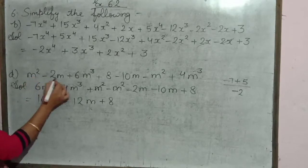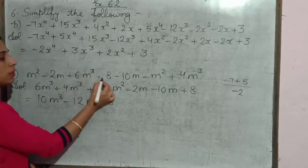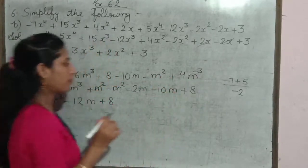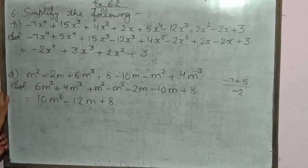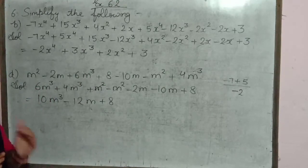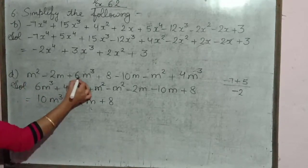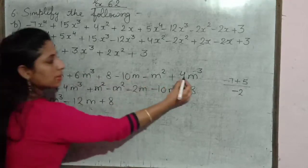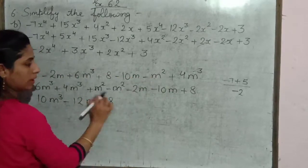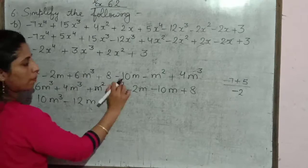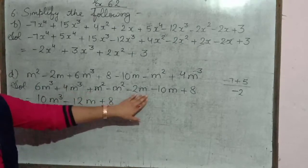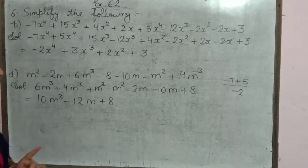Next part is: m square minus 2m plus 6m cube plus 8 minus 10m minus m square plus 4m cube. Sabse pehle yahan hai m square. Par yahan pe m cube wale terms bhi hain, toh pehle hum jo bhi highest power hai unko pehle write karte hain: 6m cube plus 4m cube. Then m square minus m square. Then minus 2m minus 10m. And then plus 8.